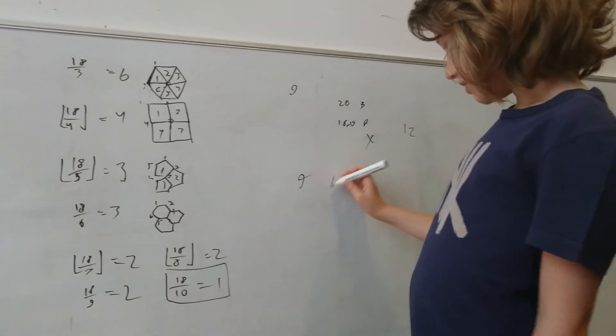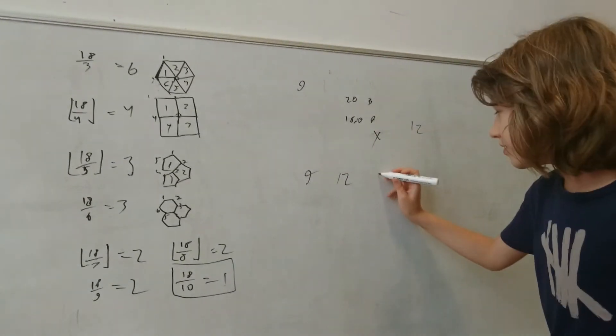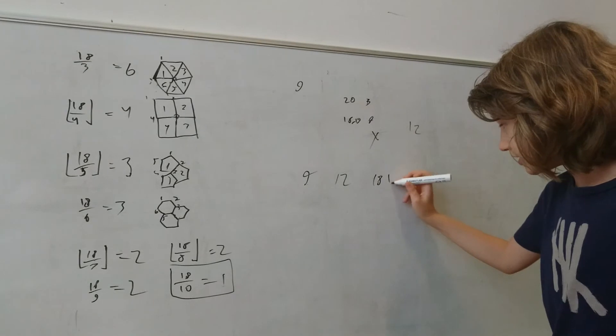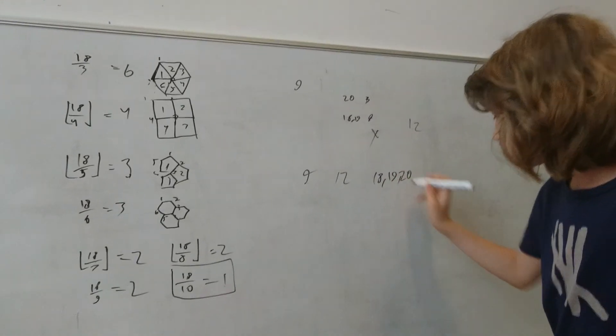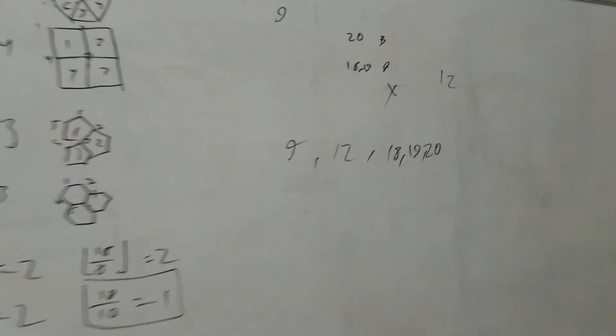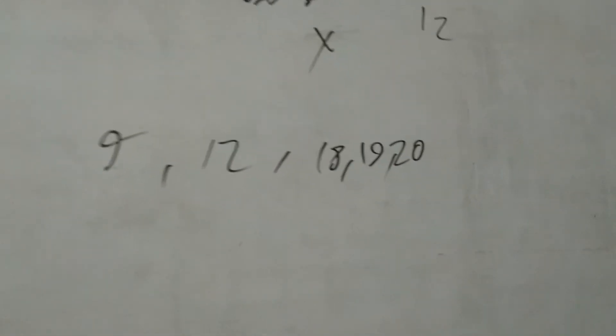Nine. Twelve. Eighteen. Nineteen. Twenty. Really special numbers.